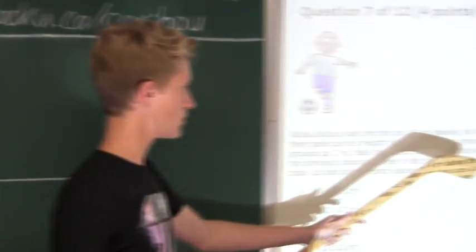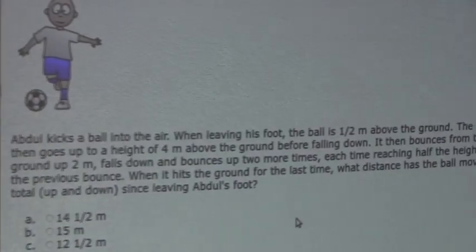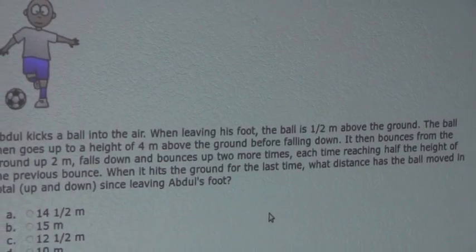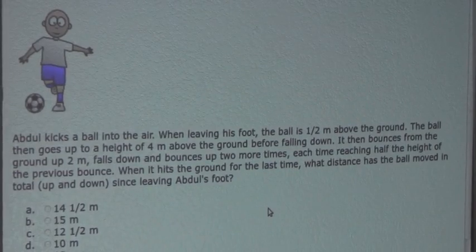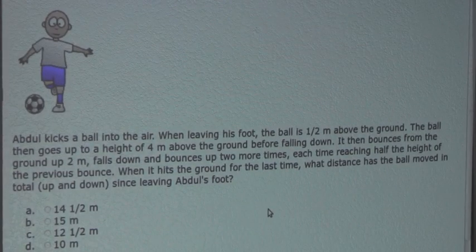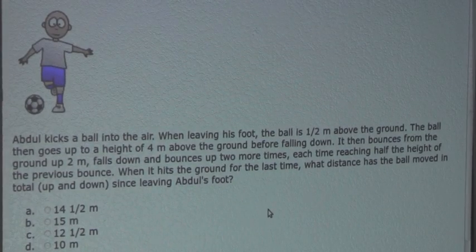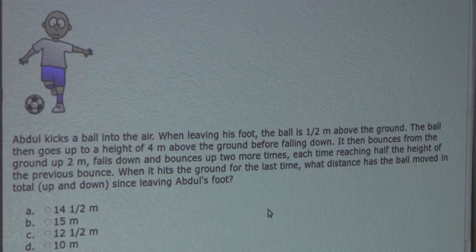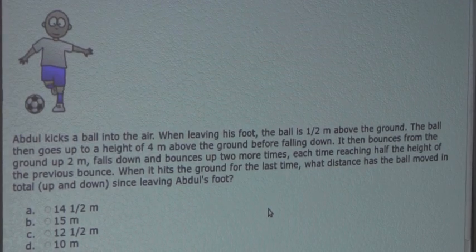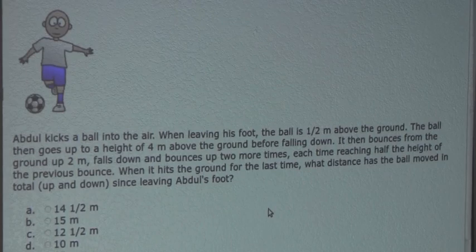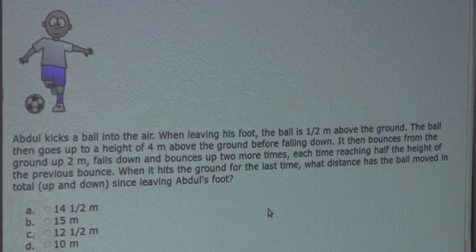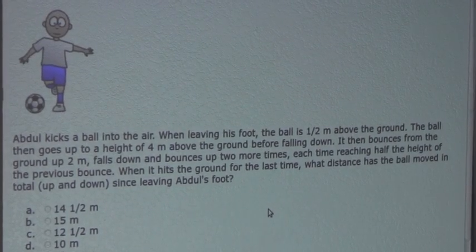Okay, so then we know that it must fall down. And then it says that it bounces from the ground up 2 meters, and of course goes down 2 meters. And then it bounces 2 more times, each time reaching half the height. So we know that it would go up 1 meter, then down 1 meter, and then up half a meter, and then down half a meter. And then it would stop.